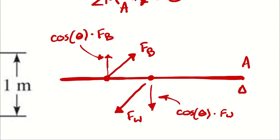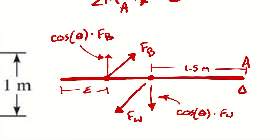The weight is going to act in the middle because I'm assuming the composition of the beam is homogenous, therefore this distance here is 1.5 meters. And just to make it easier to keep track of, I'm going to call this distance — the distance from the end of the beam to where the buoyant force acts — epsilon. Epsilon is a dummy variable; it's just going to allow me to write out the moment.